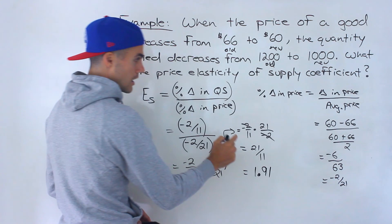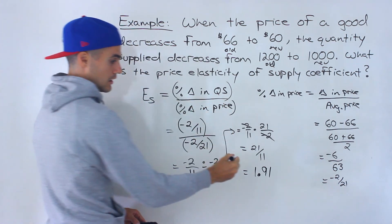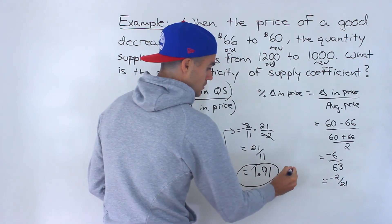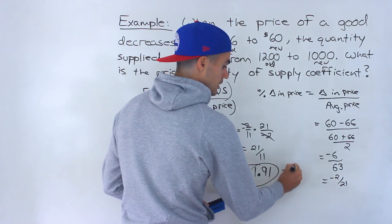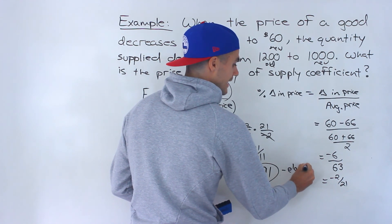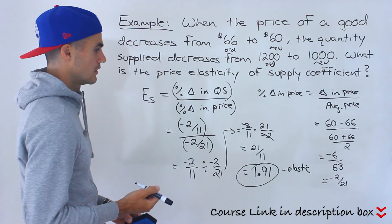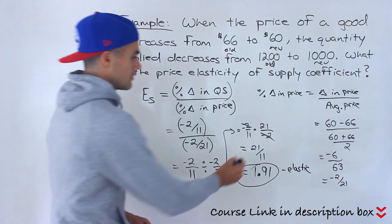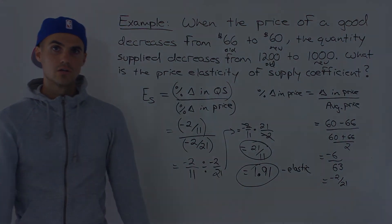So this good here, notice how the price elasticity of supply coefficient is greater than one. And so they may ask what type of good or what's the elasticity of this good. And this good would have an elastic supply because it's greater than one. All right. So either 21 over 11 or 1.91, that's the final answer to this question.